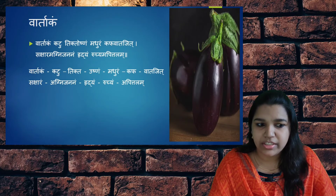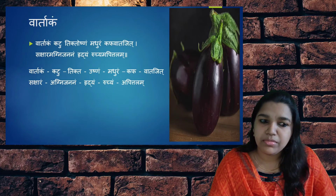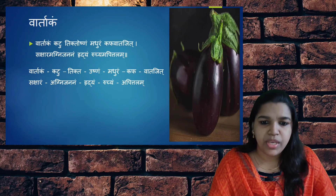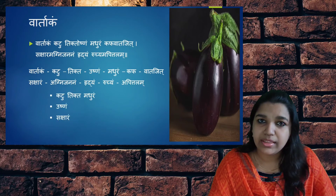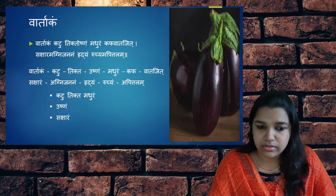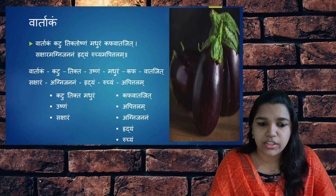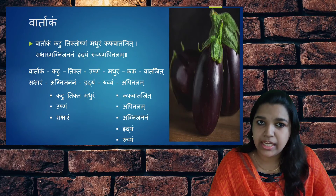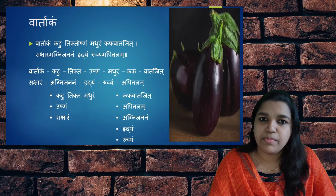Varathakam — the properties of Varathakam are: Katu, Tikta and Madhura Rasa, Ushna Virya, and it is having Kshara property also. It is Kapha Vata Jit, that is reduces Kapha and Vata Dosha. Apitta — it does not produce much aggravation of Pitta Dosha. Agni Janana — it helps in Agni Deepti; it is Hridya, that is good for the body, and it is Ruchya, that is improves the taste.